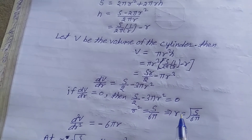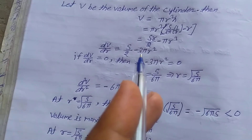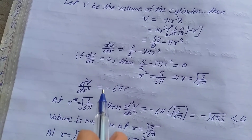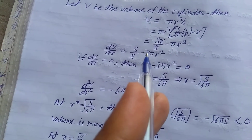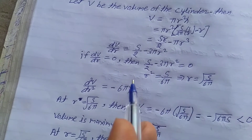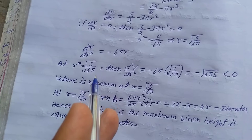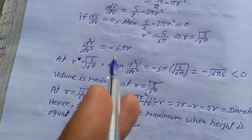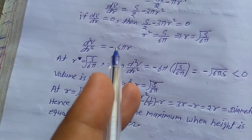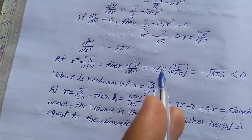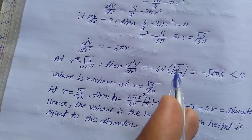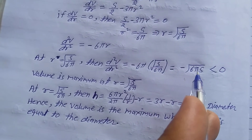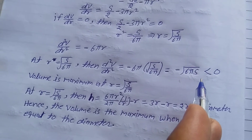The second derivative: d²V/dr² = −6πr. At r = √(S/6π), substituting gives d²V/dr² = −6π × √(S/6π) = −√(6πS), which is less than 0. By the second derivative test, the volume is maximum at r = √(S/6π).